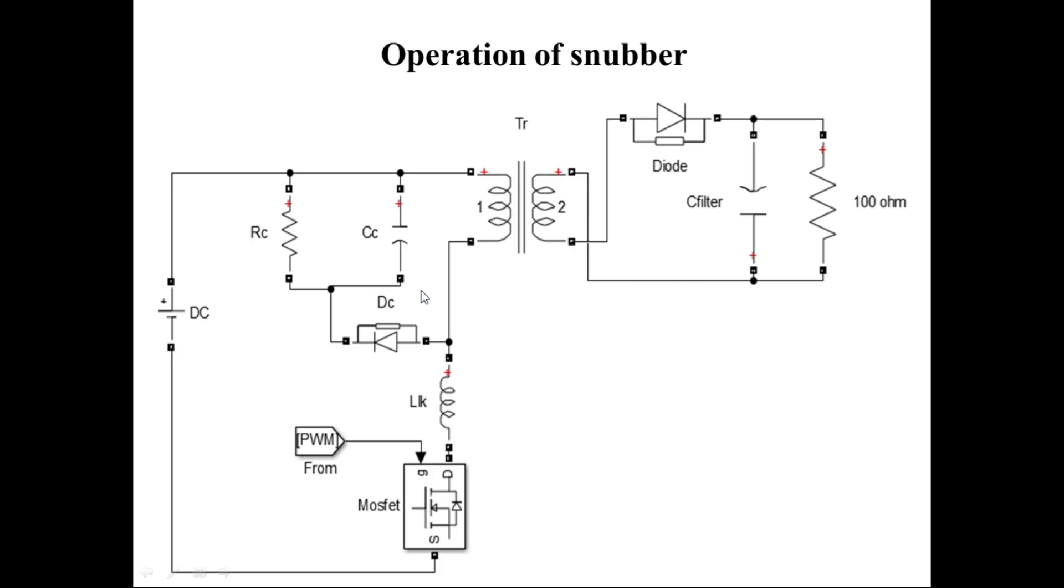So, in order to rectify the problem, we can use a TVS-based snubber circuit. This will be all for today's video. In the next video, we will see the implementation of a snubber circuit using a TVS diode.